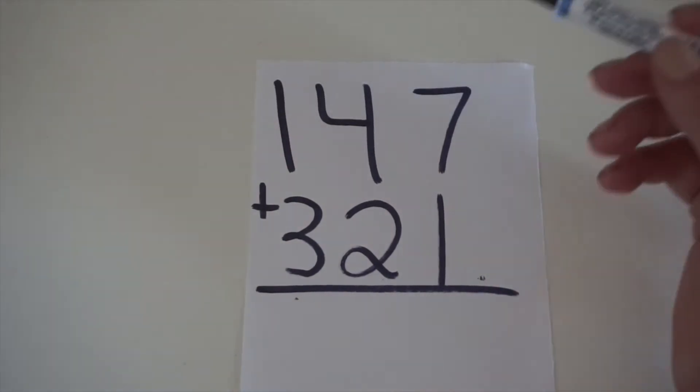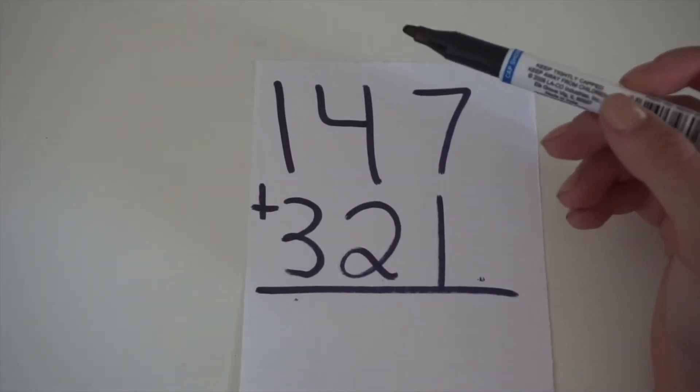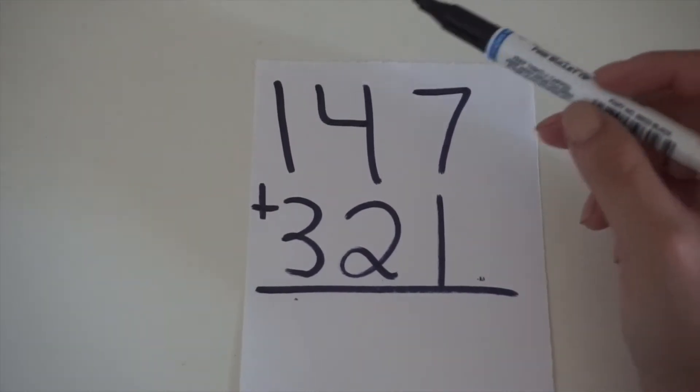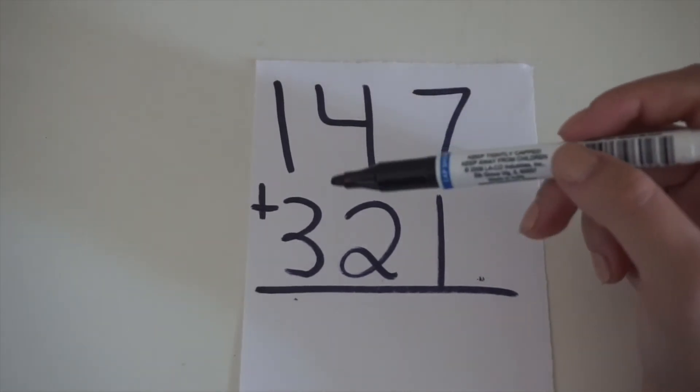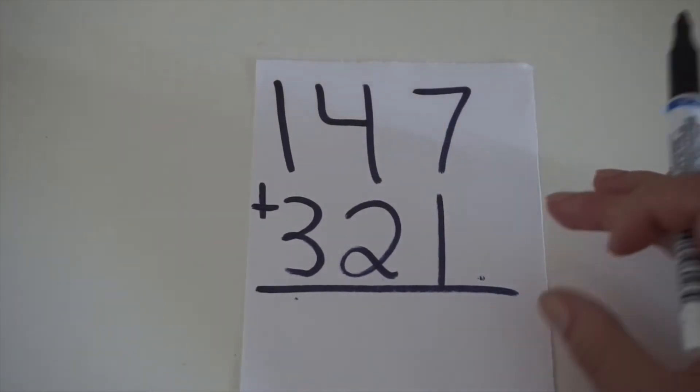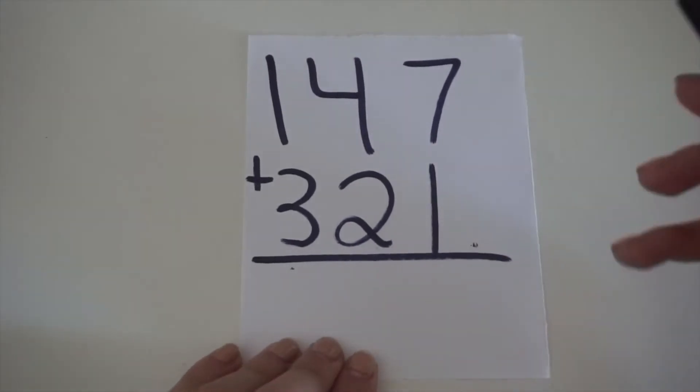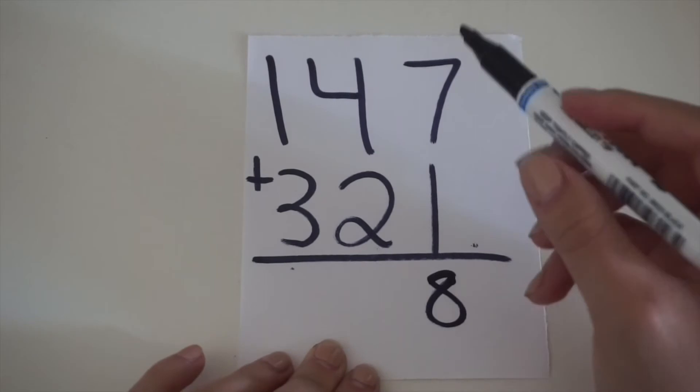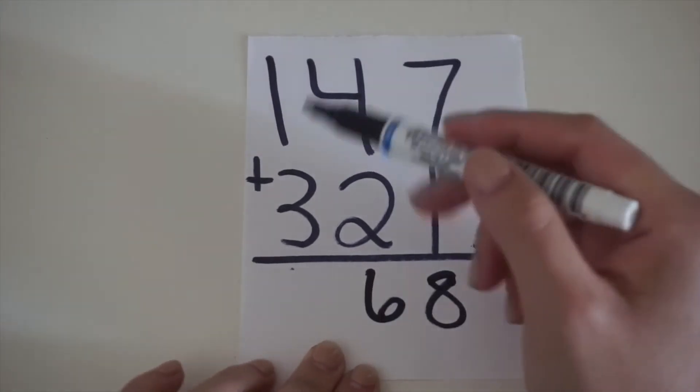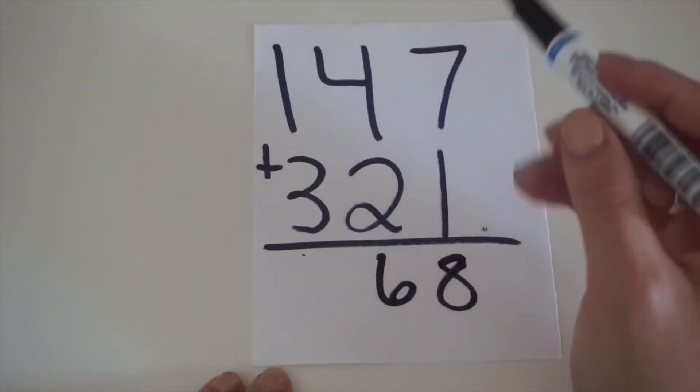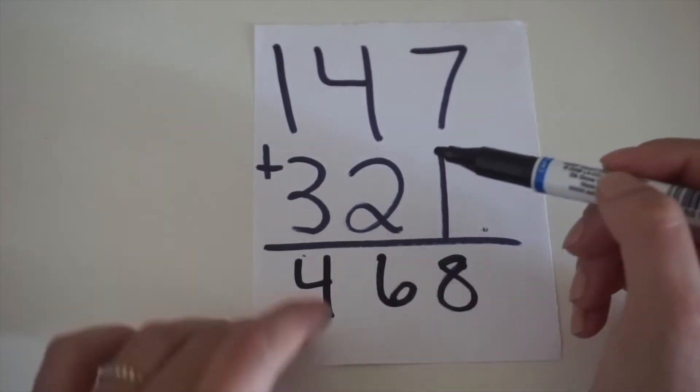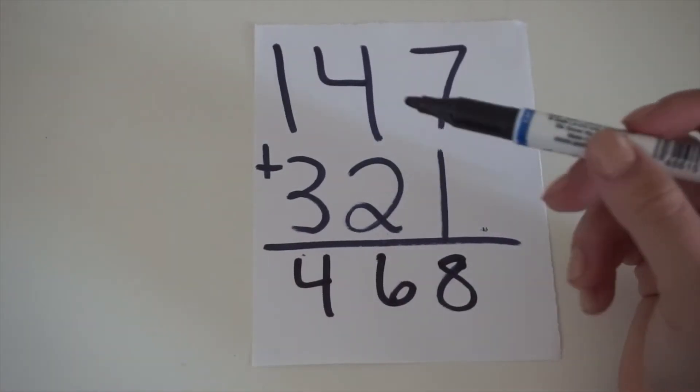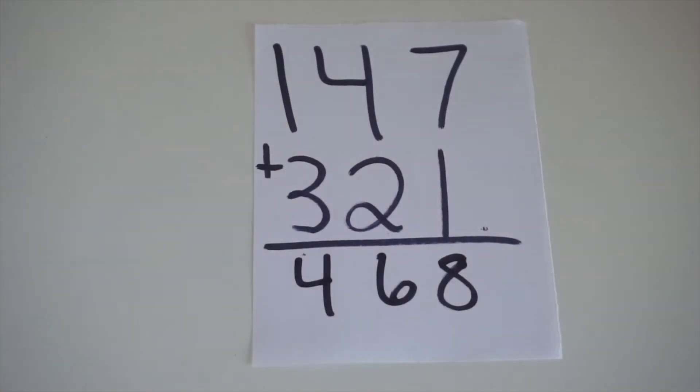Next equation, it's a little bit easier, I think. 147 plus 321. So, 7 plus 1 equals 8, 4 plus 2 equals 6, and 3 plus 1 equals 4. So, the answer to this equation would be 468.